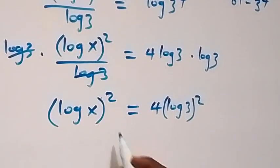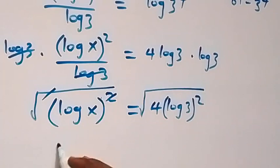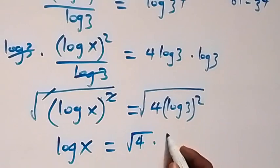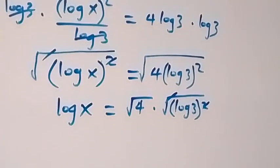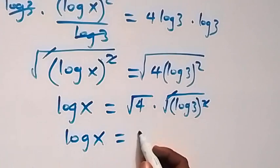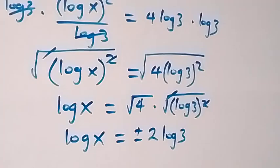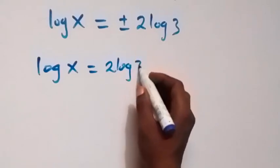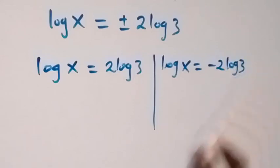To remove this square, we introduce square roots on both sides. Taking the square root on both sides, the square and square root cancel, giving us simply log x equals the square root of 4 times (log 3)^2. The square root of 4 is 2, and the square root of (log 3)^2 is log 3, so log x equals plus or minus 2 log 3. This gives two possible cases.